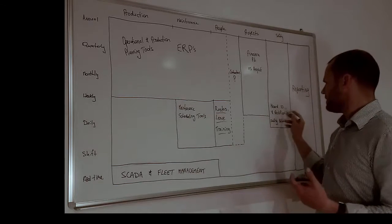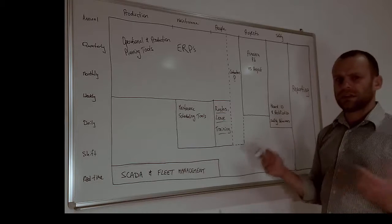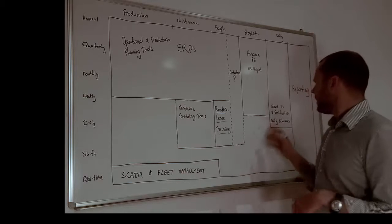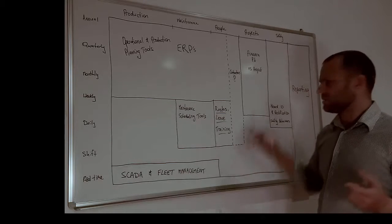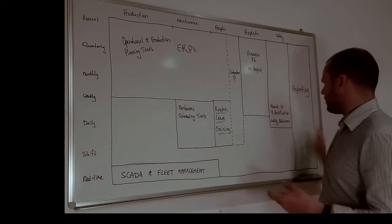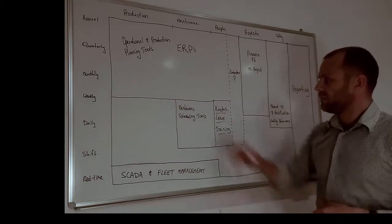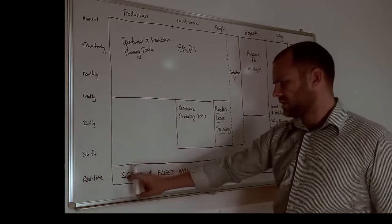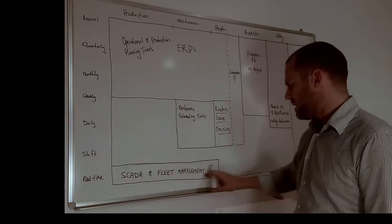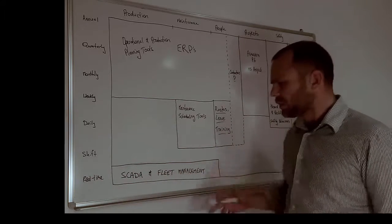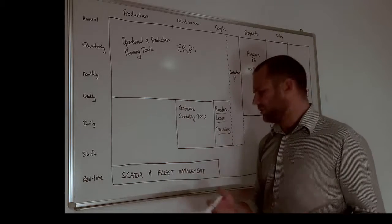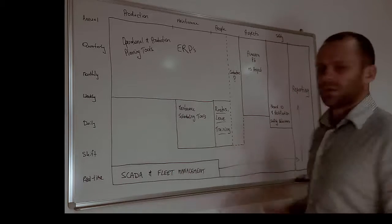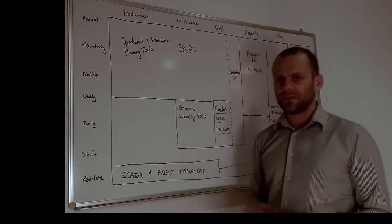In safety, you often have hazard identification and rectification tools plus some safety behaviour tools like step-back-take-fives, which live inside a system — usually a separate system again. And then over on the right you have reporting, right down at the granular real-time level with SCADA systems and fleet management systems, which tell us exactly what's happening right now and often connect into reporting tools to show production results for a day, shift, or week.